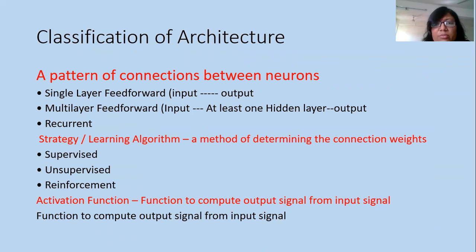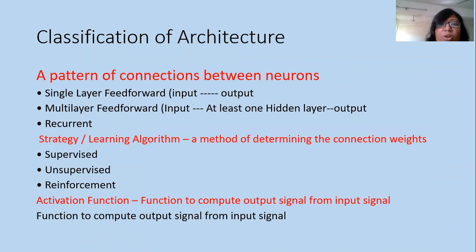This is the feed-forward pattern. But if there is feedback in the network — where the output of any node feeds back to the first node — then we call it a recurrent network. Feed-forward networks are of two types: single-layer and multi-layer.